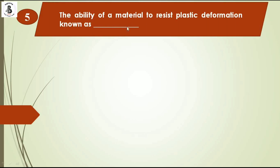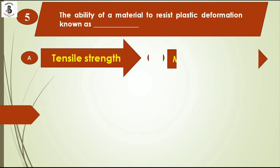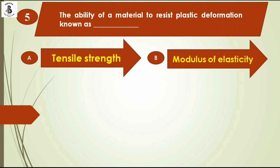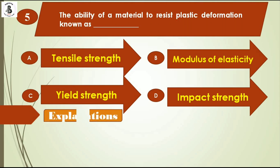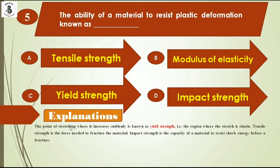The ability of the material to resist plastic deformation is known as: option A tensile strength, option B modulus of elasticity, option C yield strength, option D impact strength. The yield strength is the point where stretching increases suddenly — the region where stretch is elastic. Tensile strength is the force needed to fracture the material. Impact strength is the capacity to resist shock energy before fracture. So the ability to resist plastic deformation is yield strength, option C.